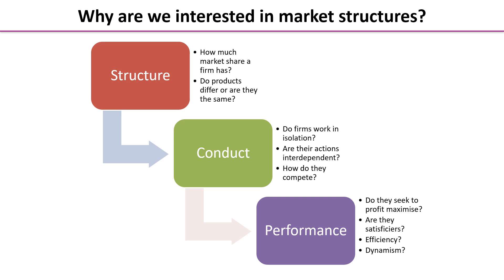In terms of performance, do they seek to profit maximise — the assumption that rational businesses maximise profit — or are they satisficers, aiming for a satisfactory or adequate result rather than the best possible? We also consider productive efficiency, allocative efficiency, and dynamic efficiency: how much dynamism, new ideas, and innovation flows through the market, or whether it's fairly static.